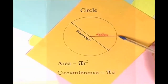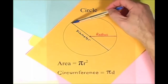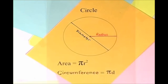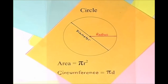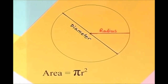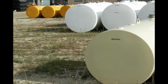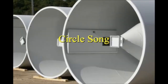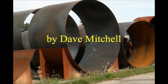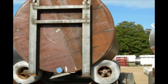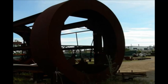Here is a circle, it knows how to get around. It has a radius from center to rim. And its diameter's a line that goes from side to side while passing through the center, now isn't that simple. Pi r squared sounds like area to me, when I need a circumference, I'll just use pi d. Pi r squared sounds like area to me. Here is a circle, it knows how to get around.